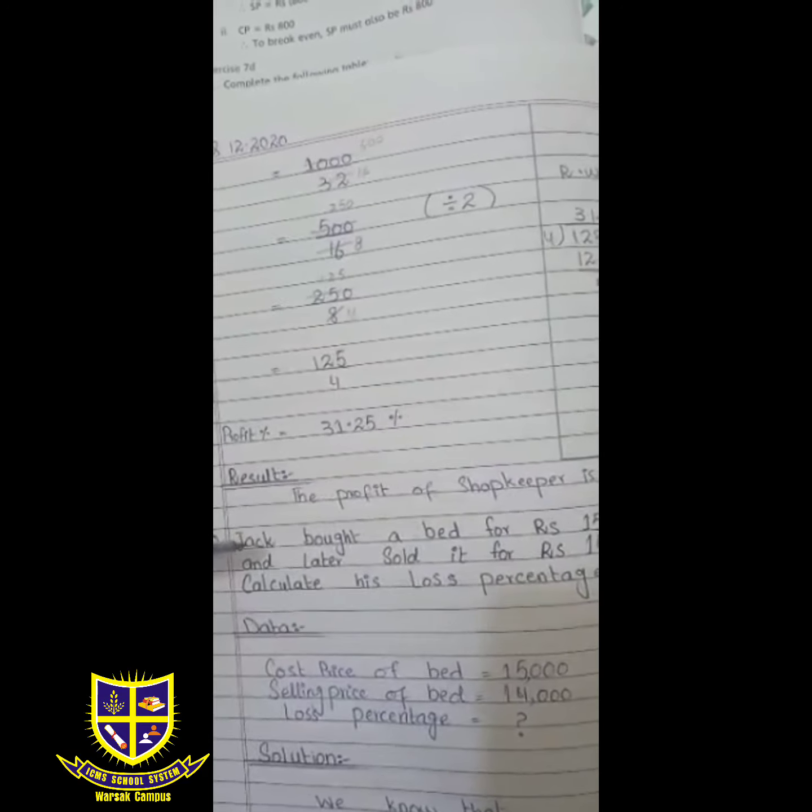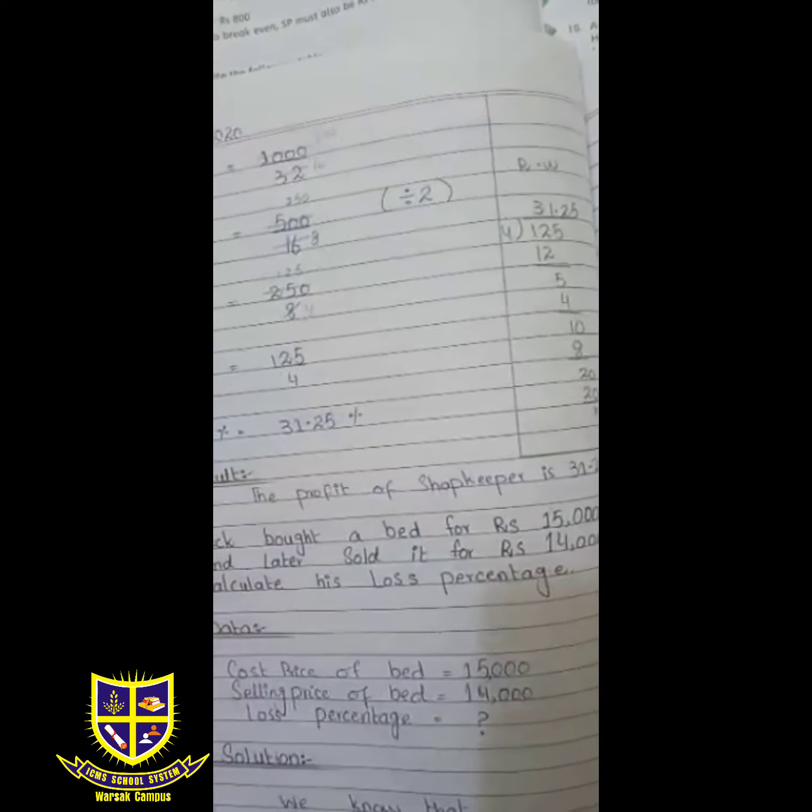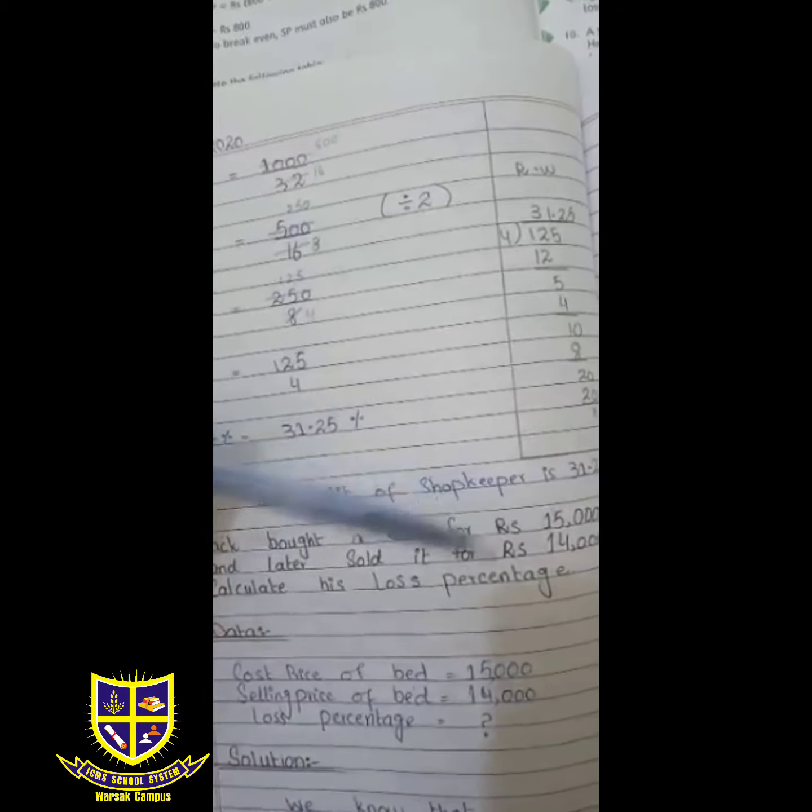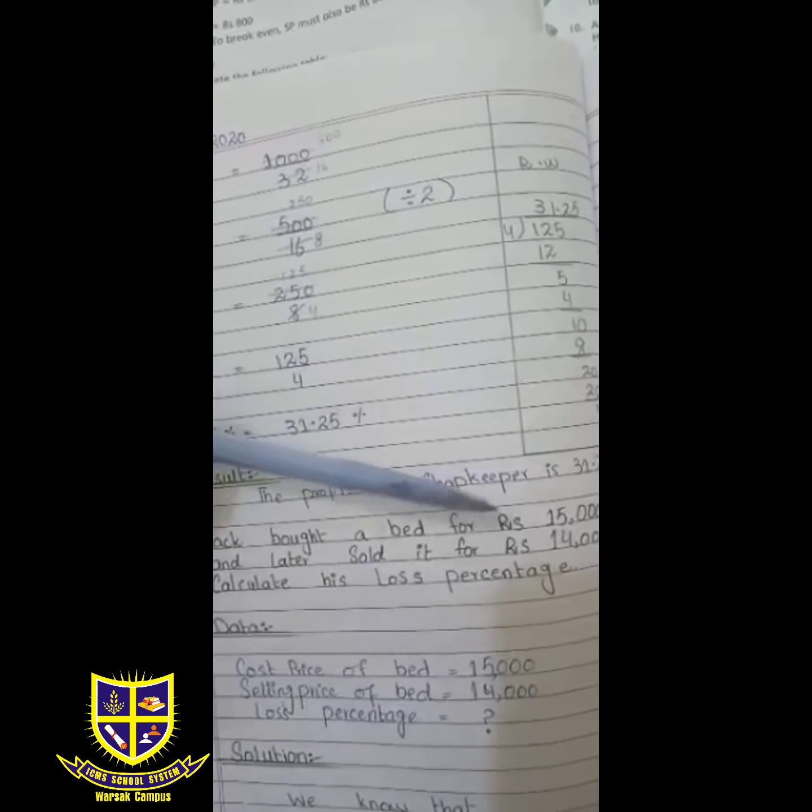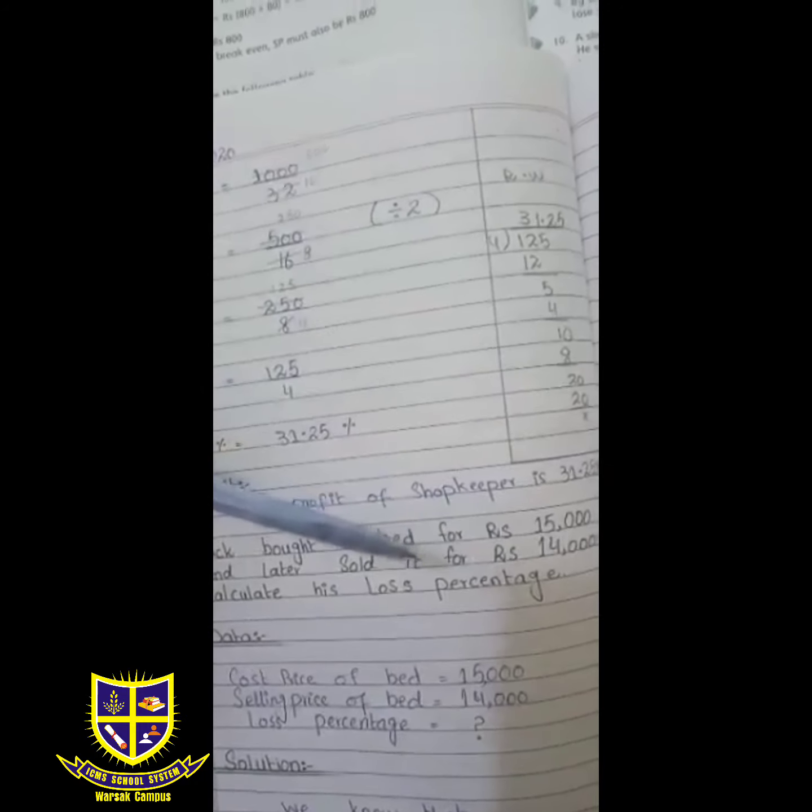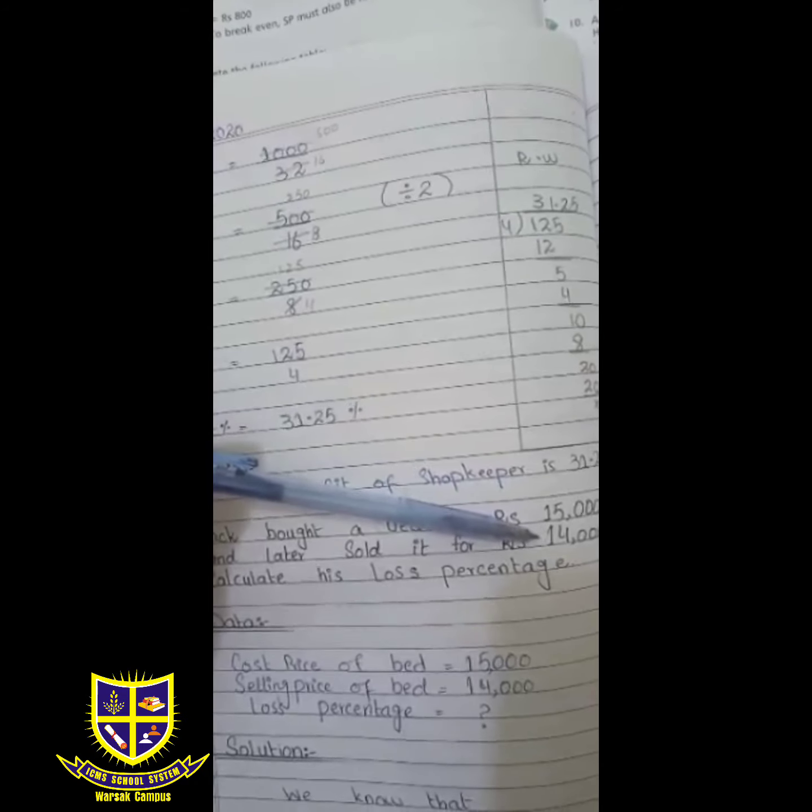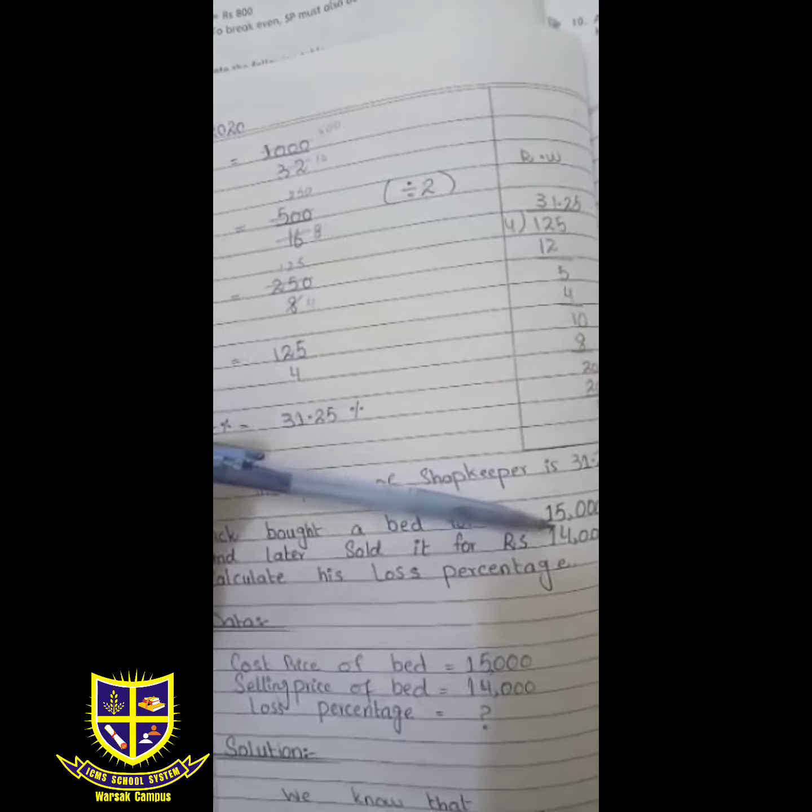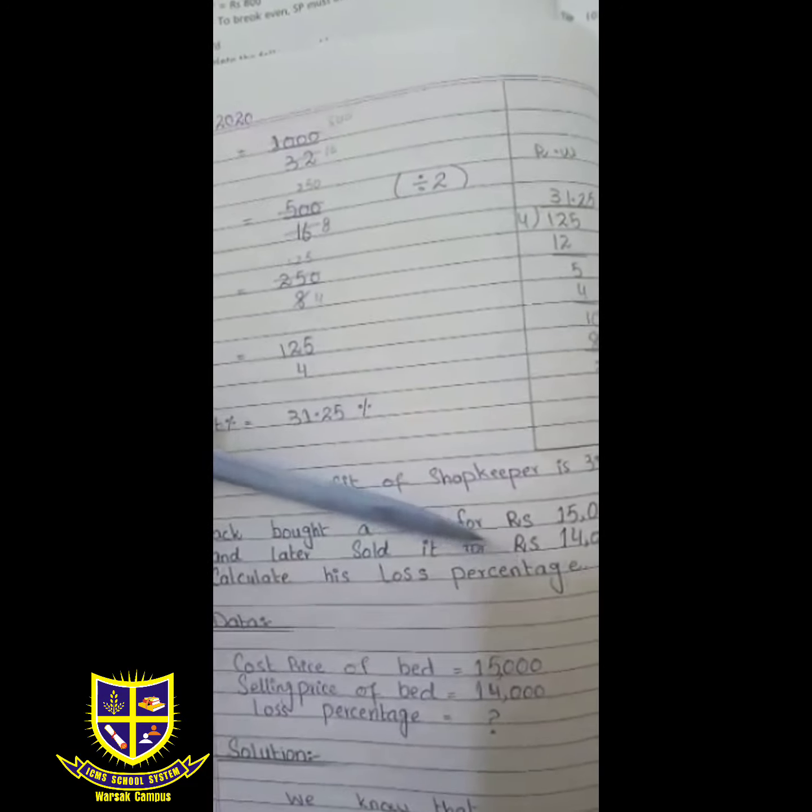Second question: Jack bought a bed for rupees 15,000 and later sold it for rupees 14,000. Calculate his loss percentage. Jack bought a bed for 15,000 and sold it for 14,000. This means cost price is 15,000 and selling price is 14,000. Since selling price is less than cost price, this is a loss. We need to calculate the loss percentage.